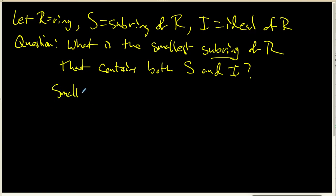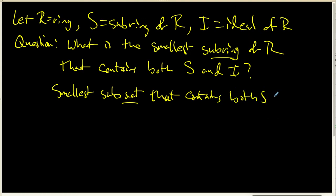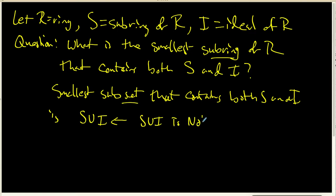Now, the smallest sub-set that contains both of the sets S and I is, of course, the union. But we know from a previous assignment that S union I is not, in general, a sub-ring. So the smallest sub-ring that contains both S and I is not the union. So we need a definition.